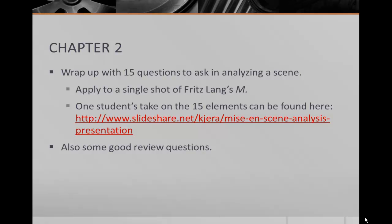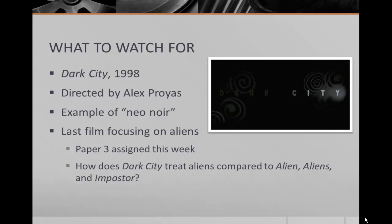Now let's talk about the movie. Dark City was released in 1998, directed by Alex Proyas, who you may know from The Crow, which came out a few years before — a very dark movie, visually. Dark City is an example of neo-noir. Film noir is a term from way back at the beginning — shots tend to be very dark, very high contrast: the darks are really dark, the lights are really light. This is also our last film focusing on aliens. Paper 3 is assigned this week, which involves comparing and contrasting all four movies that deal with aliens: Alien, Aliens, Impostor, and this week's Dark City.